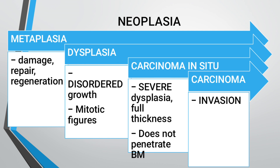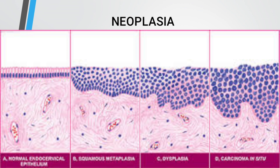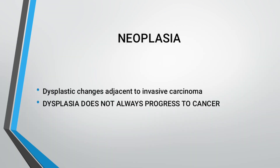Neoplasia involves damage, repair, and regeneration. Dysplasia means disordered growth with mitotic figures. Carcinoma in situ — CIN dysplasia — involves full-thickness changes that do not penetrate the basal membrane. Carcinoma causes invasion. Dysplasia changes are adjacent to the invasive carcinoma. Dysplasia does not always progress to cancer.